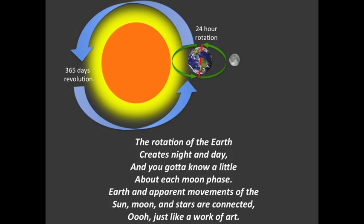The rotation of the earth creates night and day, and you gotta know a little about each moon phase. Earth and apparent movements of the sun, moon, and stars are connected — just like a work of art.